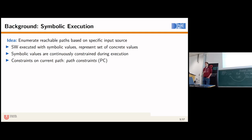Symbolic values represent a set of possible concrete values at a specific point in time — for example, all values between 5 and 10, or all values greater than 10. These symbolic values are continuously constrained during execution to match the constraints the program enforces on its input. For example, if we have a symbolic value A and take a branch on A greater than 5, then from that point onward A can only refer to values greater than 5. These constraints on the current execution path are referred to as path constraints, or PC.